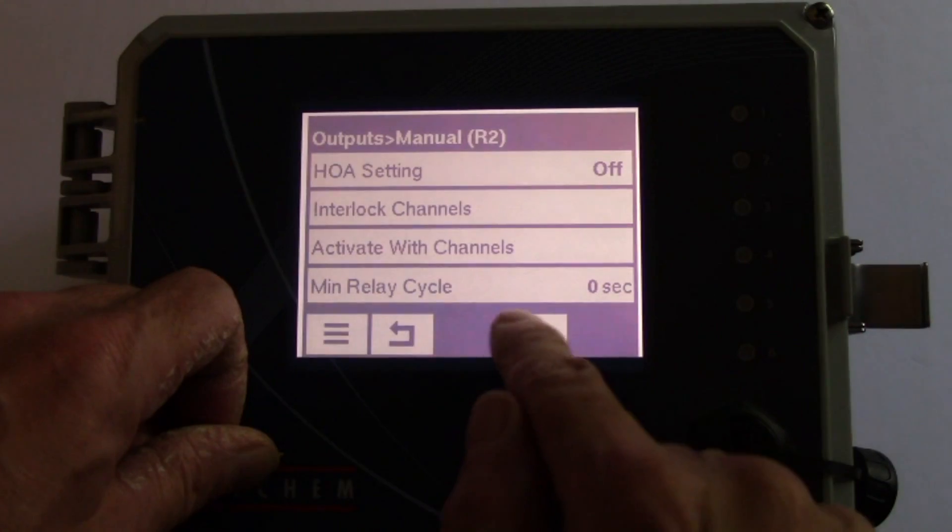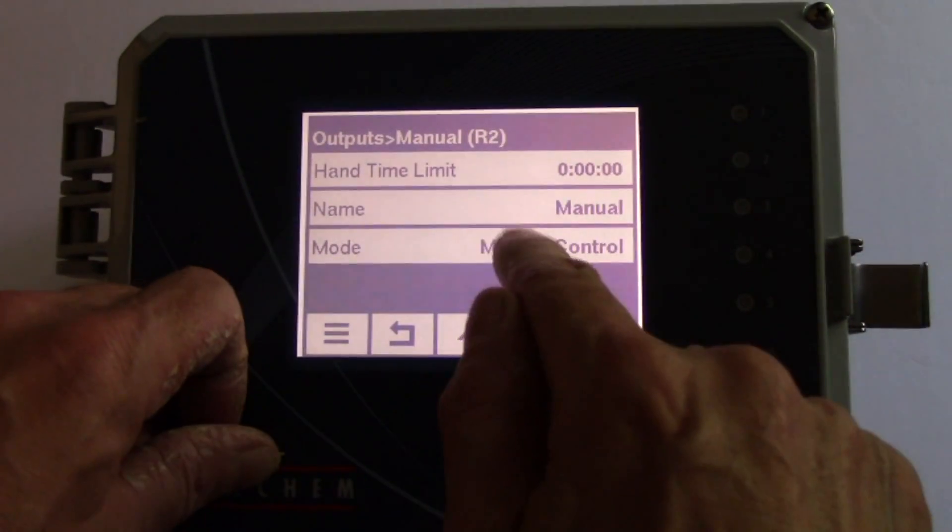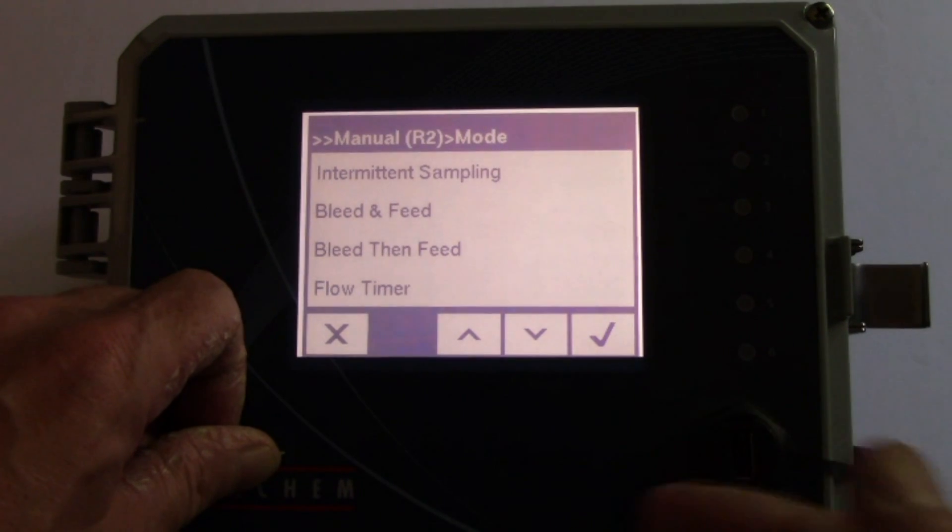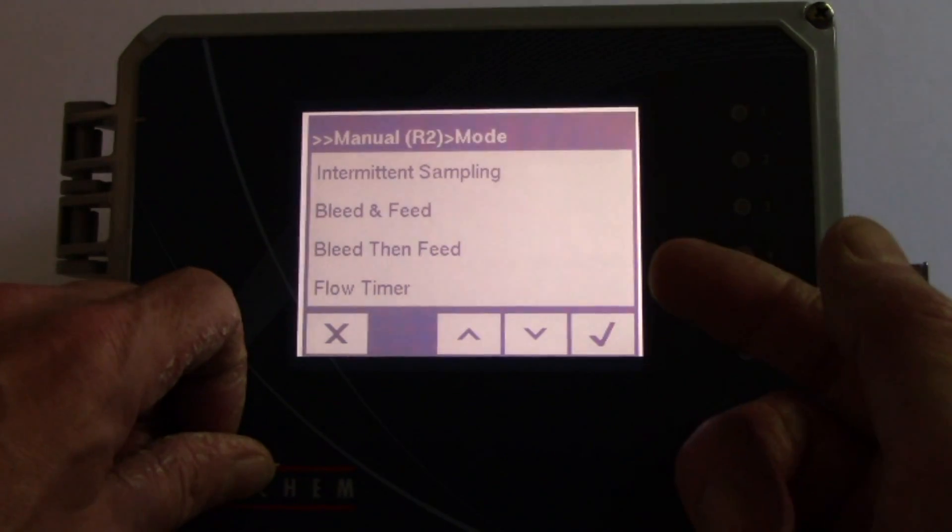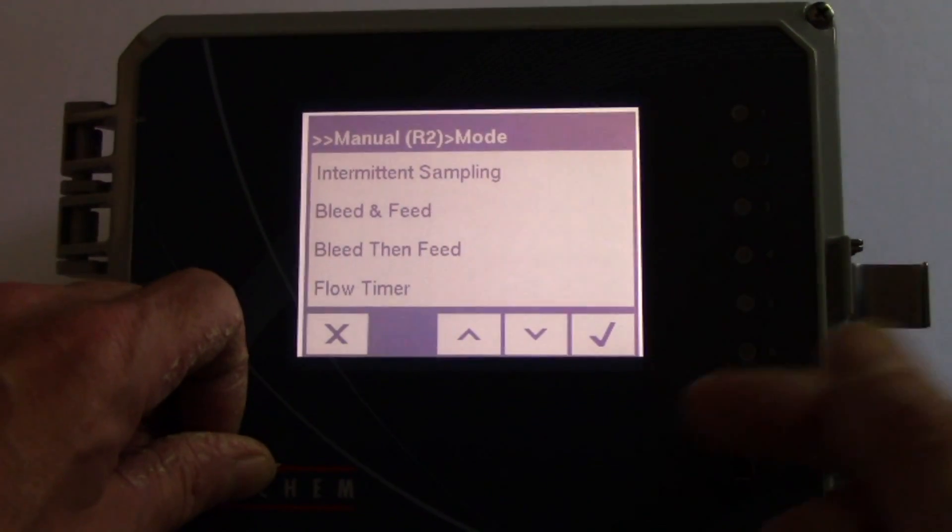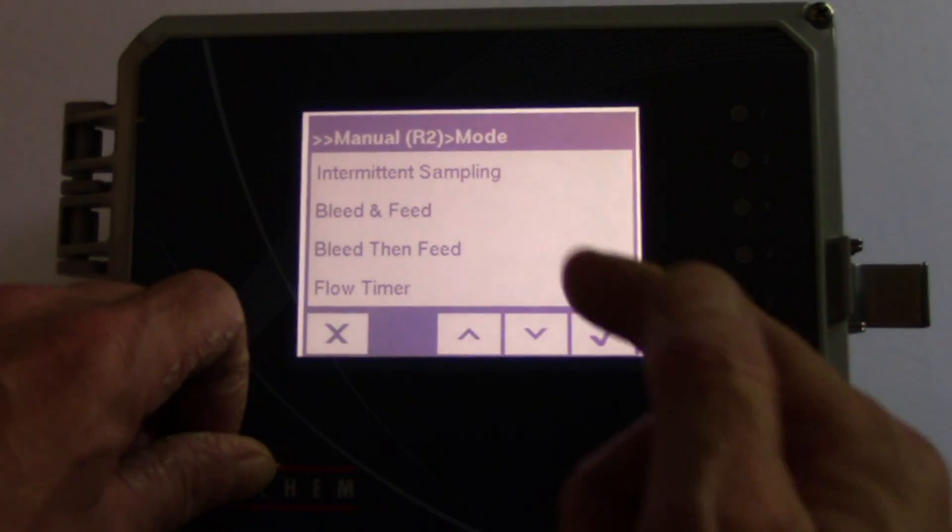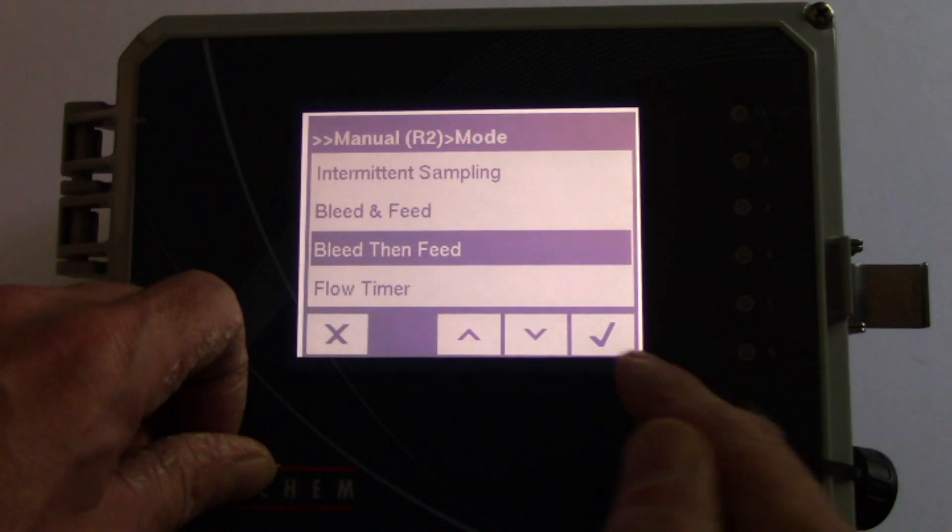And then settings. Then the down arrow until you get to mode. And you have a couple of choices, or three choices for inhibitor feed. You can do bleed and feed, bleed then feed, or feed after bleed, or a flow timer. I'm going to choose bleed then feed, hit check.